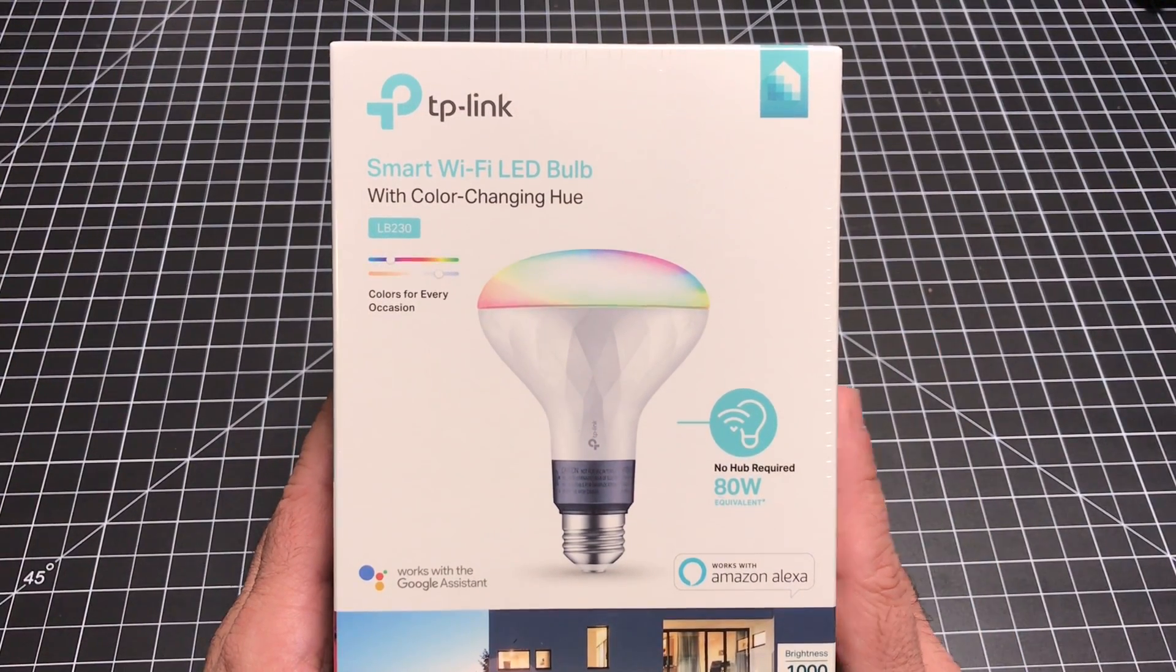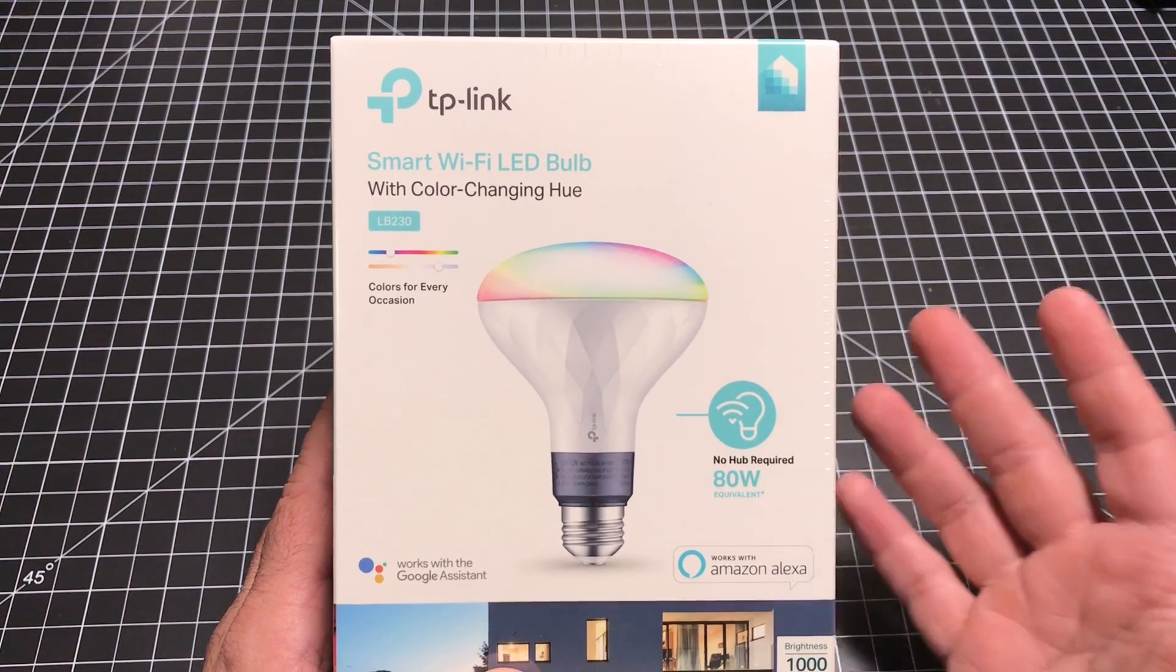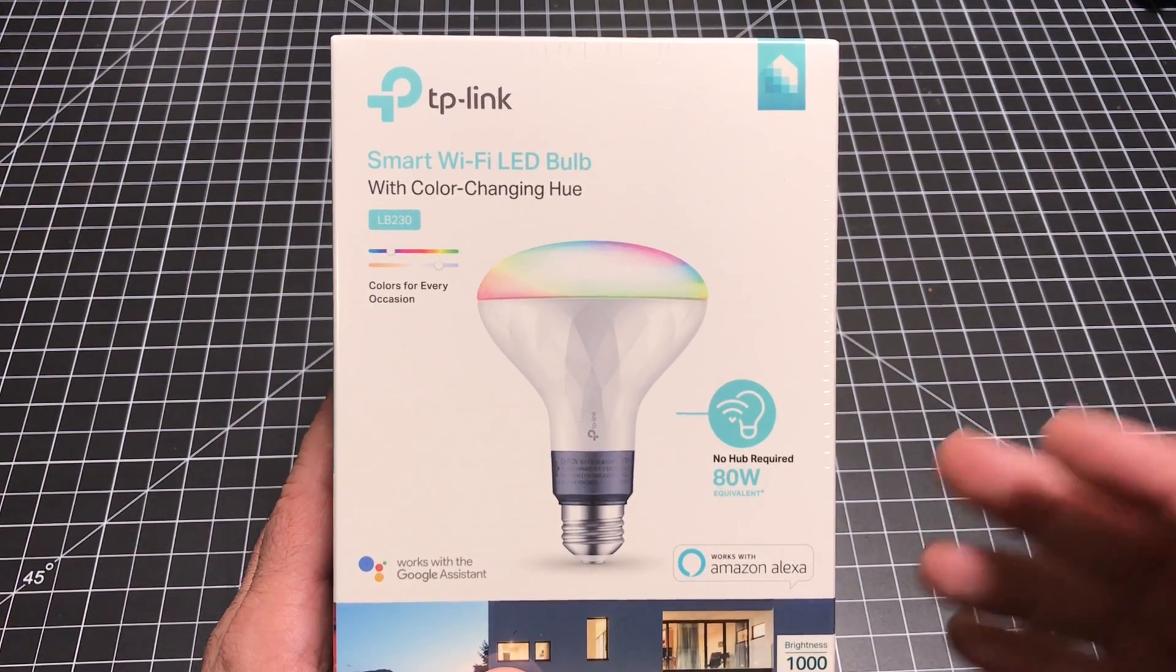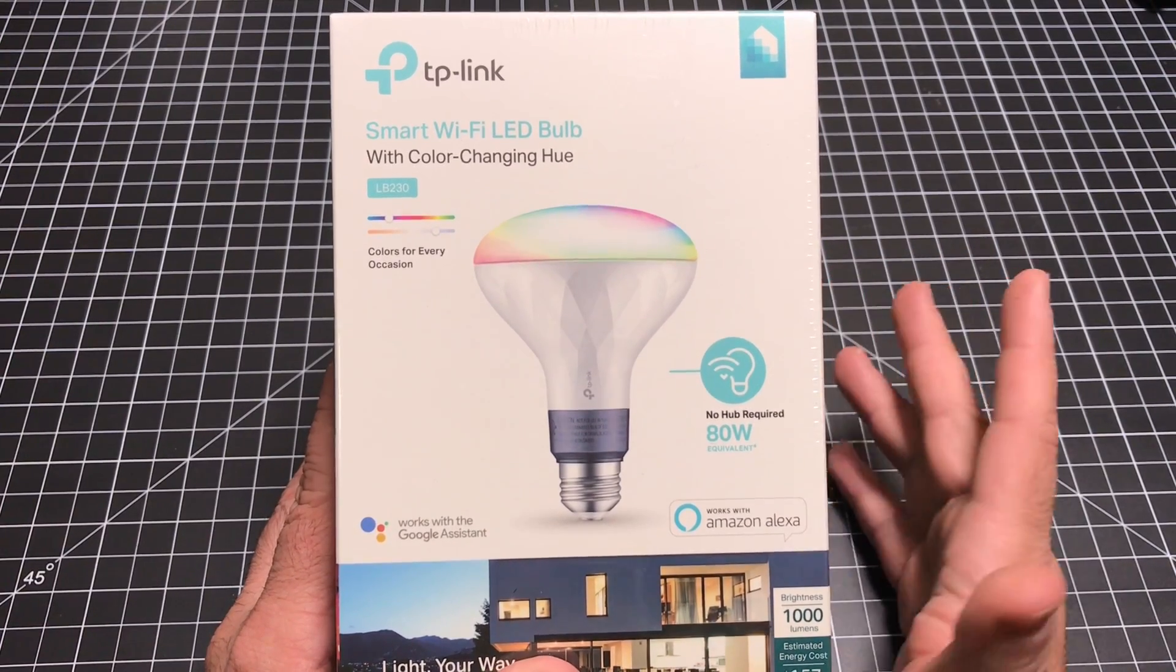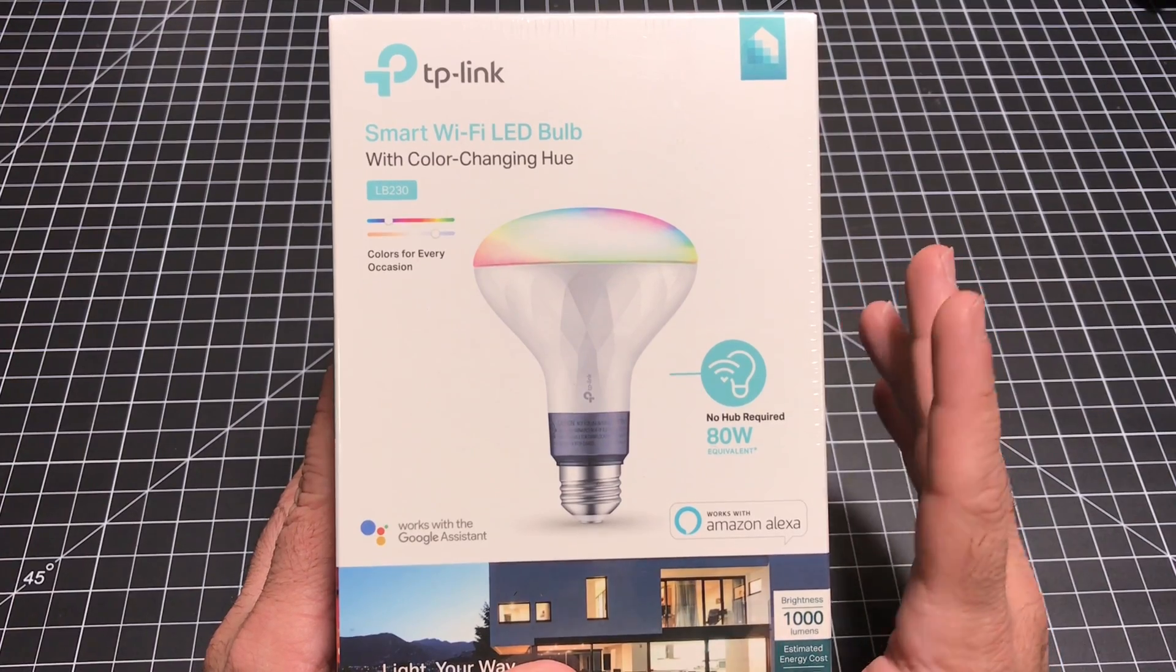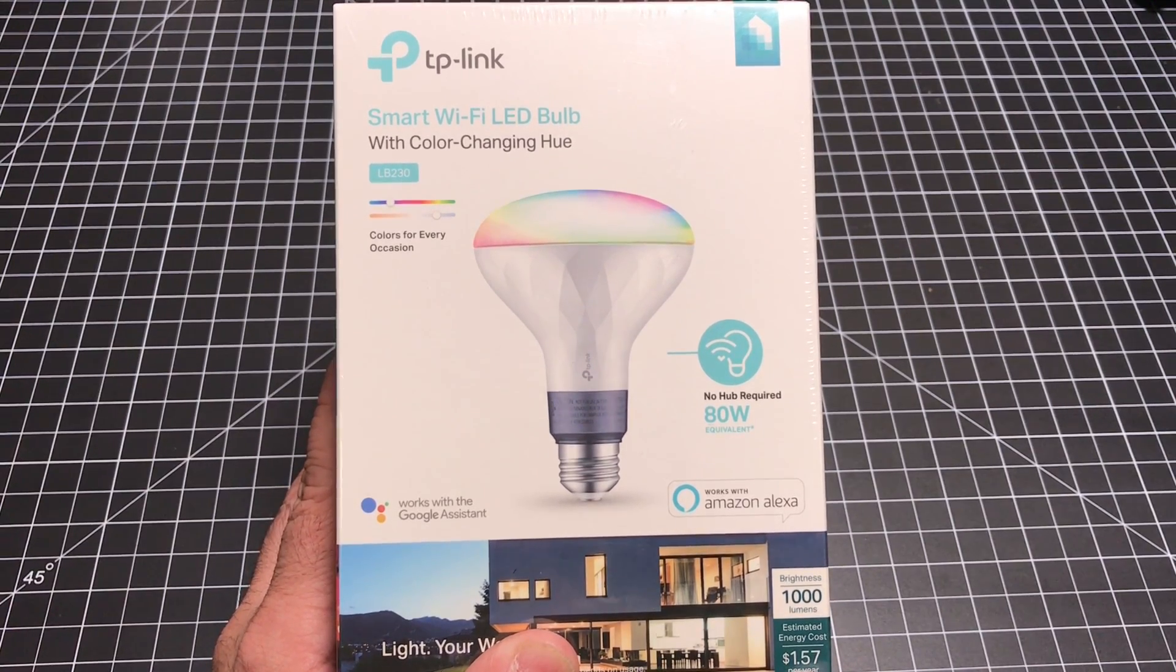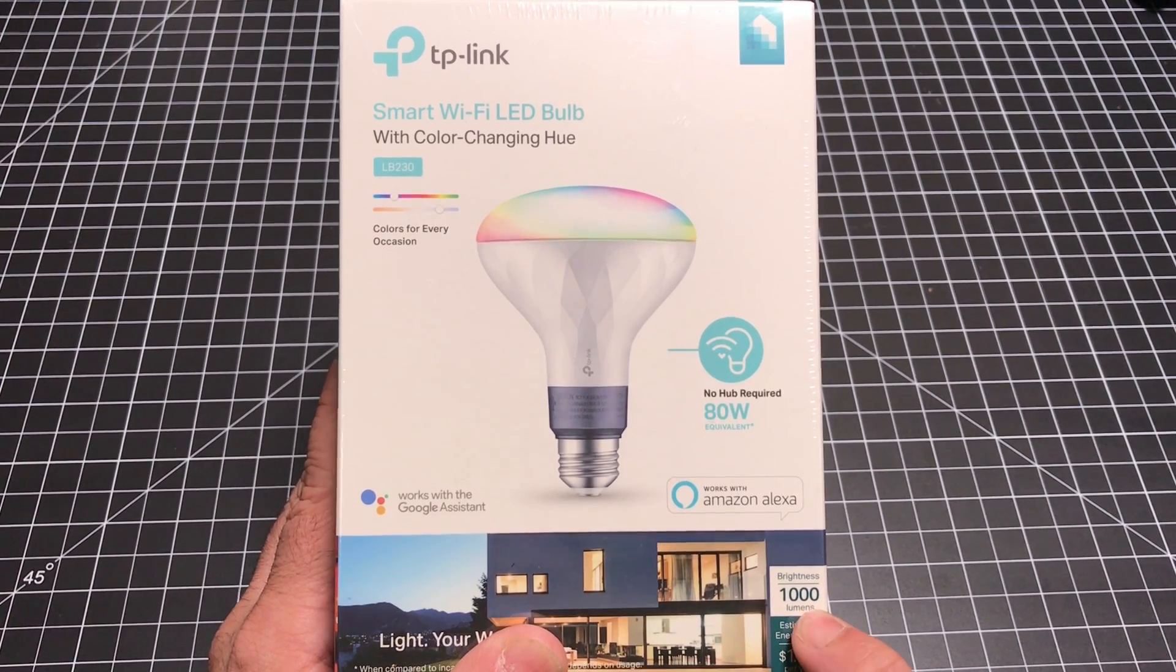This is a smart bulb brought to us by TP-Link that not only is going to be able to lighten your home but it's also going to give you various color options to set the mood and just change things up. Now even though there's a whole lot of tech in these bulbs this is an energy efficient bulb. It is an LED bulb which is going to be significantly less expensive than a standard bulb and you can see what the annual cost per year is $1.57 to run this bulb.